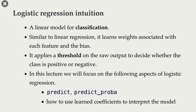The idea is to apply a threshold on this raw prediction score. For example, we can say: if the score is greater than or equal to 0, then predict positive; if it is less than 0, predict negative. So that's the overall idea of logistic regression, or any linear classifier.